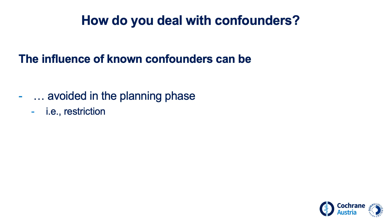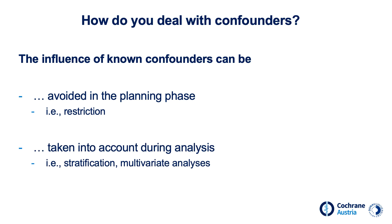One can also consider confounding in the analysis, for example with stratification. In our coffee study, we would stratify all individuals into groups — that is, divide them into smokers and non-smokers — and examine in both groups if there is a connection between coffee drinking and heart disease. If only people who smoke are at an increased risk for heart disease, then we would see that drinking coffee is not the cause. When dealing with several confounders, multivariate analyses can be calculated which adjust for multiple confounders.